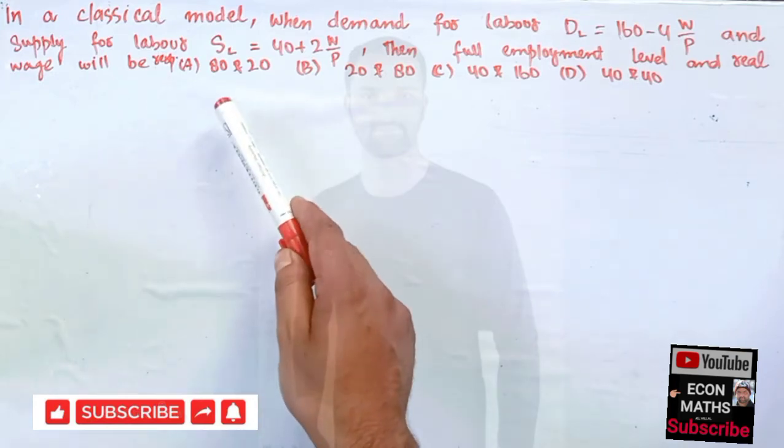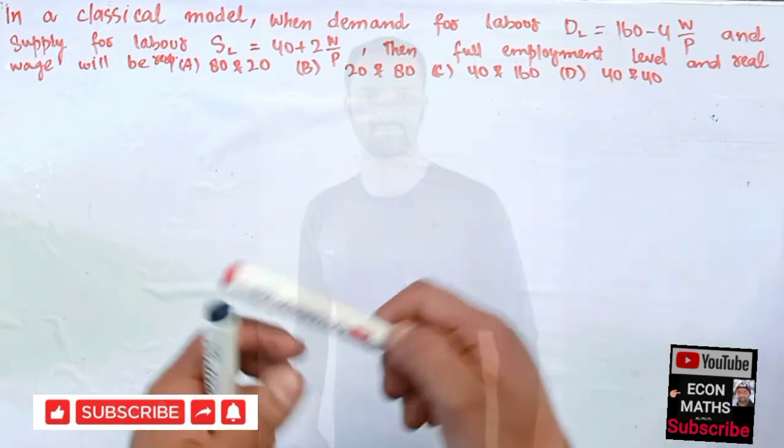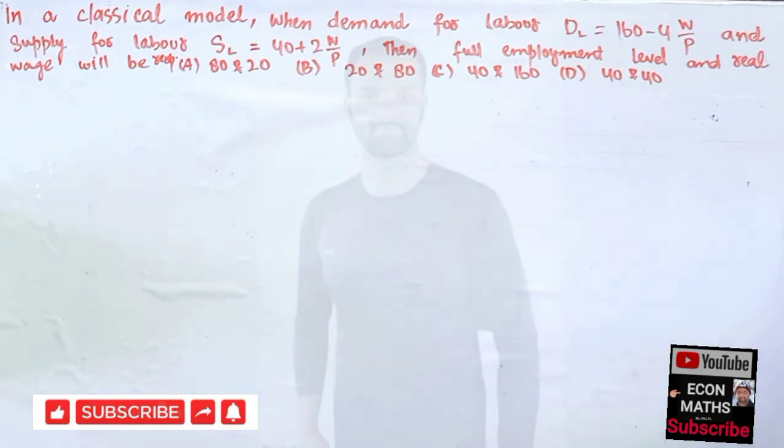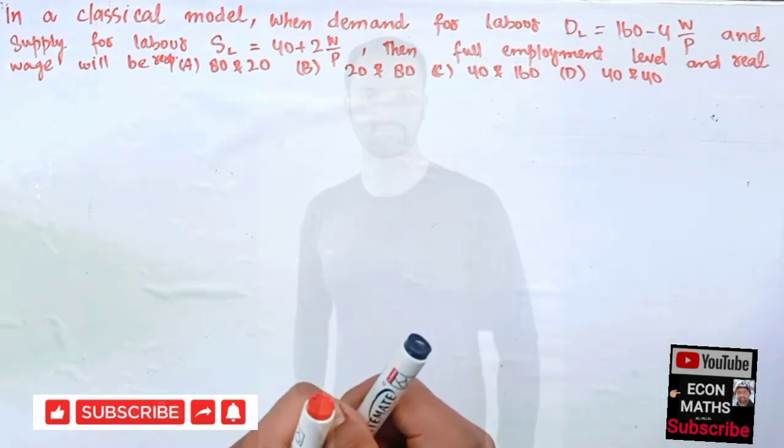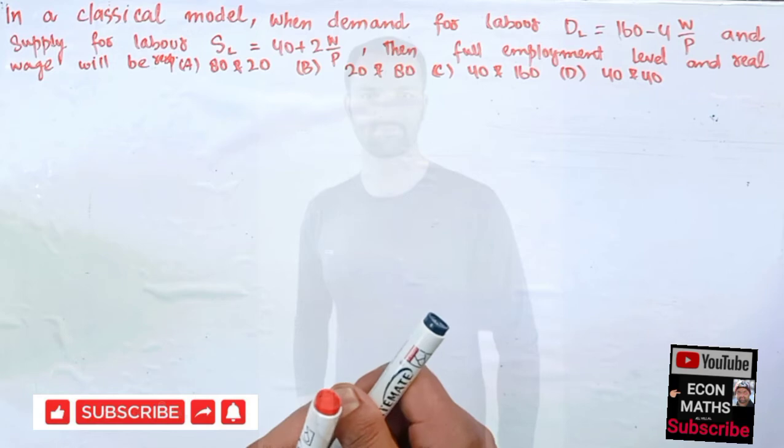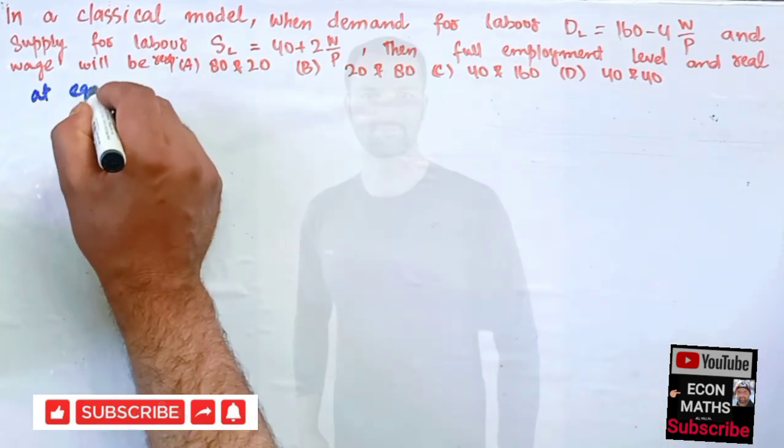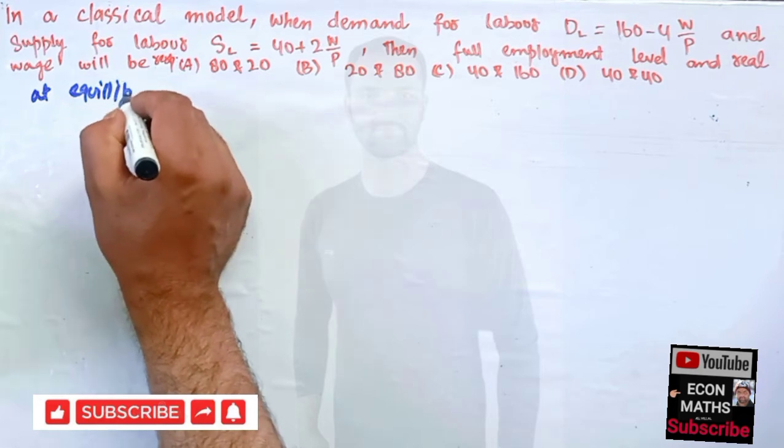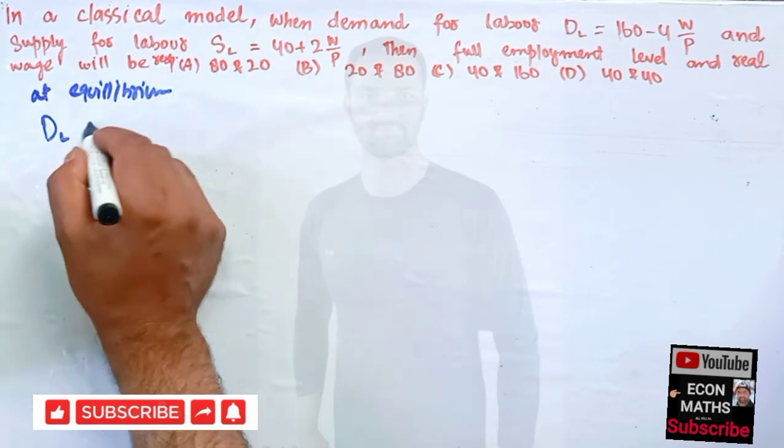The options are 80 and 20, 20 and 80, 40 and 160, or 40 and 40. So we will see how to solve this. Actually, it's a very easy question. We just have to equate the demand for labor and supply for labor.